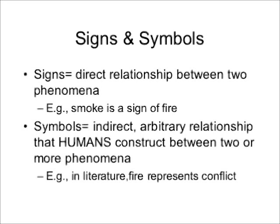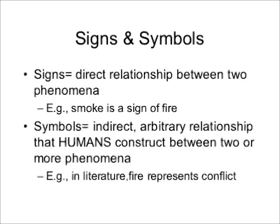A symbol is different because a symbol refers to an indirect, arbitrary relationship that humans construct between two or more phenomena — it's how we symbolize our world. For instance, in literature, fire is often used by authors to represent conflict. But it's not like a sign because there's no direct relationship between fire and conflict. If you argue with a friend, the furniture around you doesn't combust into flames. Instead, the metaphorical relationship humans have constructed between fire and conflict is just one way they symbolize or metaphorically render their world.